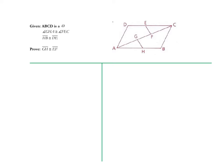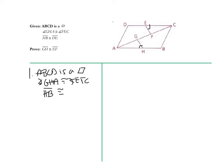Let's go ahead and write down the given. ABCD is a parallelogram. Angle GAH is congruent to angle EFC — we can mark that because it's already telling us they're congruent. GHA is congruent to FEC. And HB is congruent to DE. Let's break down ABCD as a parallelogram.